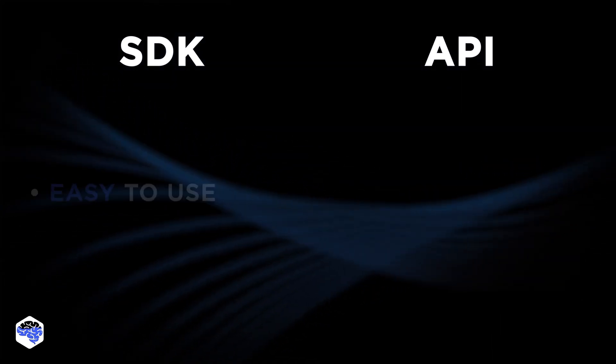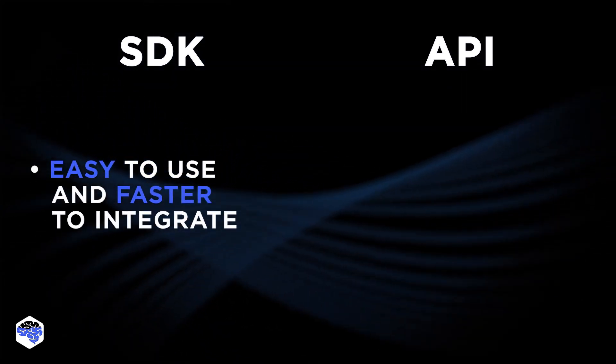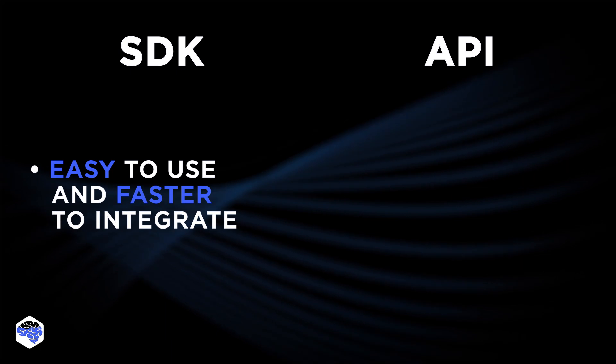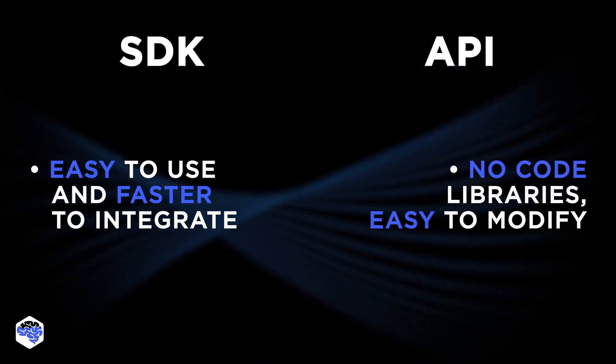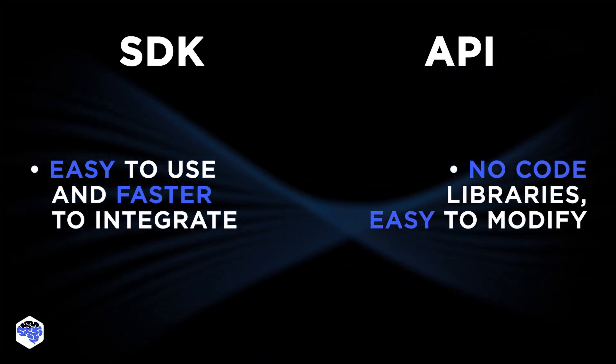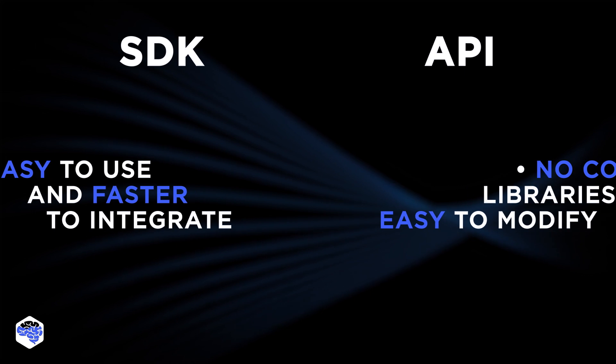An API establishes communication between two applications, while SDK is the toolbox you need to build applications. An SDK may contain APIs, but APIs cannot contain SDKs. SDKs are easy to use and faster to integrate, while APIs don't have code libraries and are easy to modify.